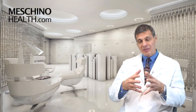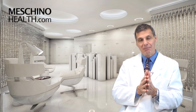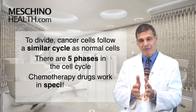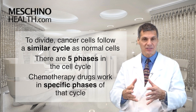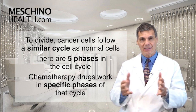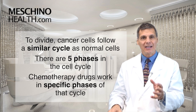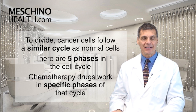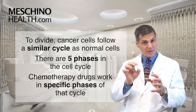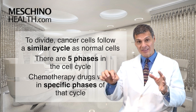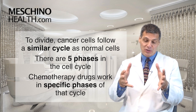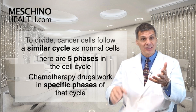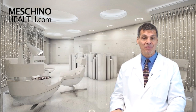When cancer cells divide — and cancer cells are on a mission to keep dividing — they have to go through the same sequence as healthy cells do when they divide. There are five phases within what's called the cell cycle, and chemo drugs often work in specific phases of that cell cycle to stop the cell from dividing or to create events that will get the cancer cell to commit suicide or die.